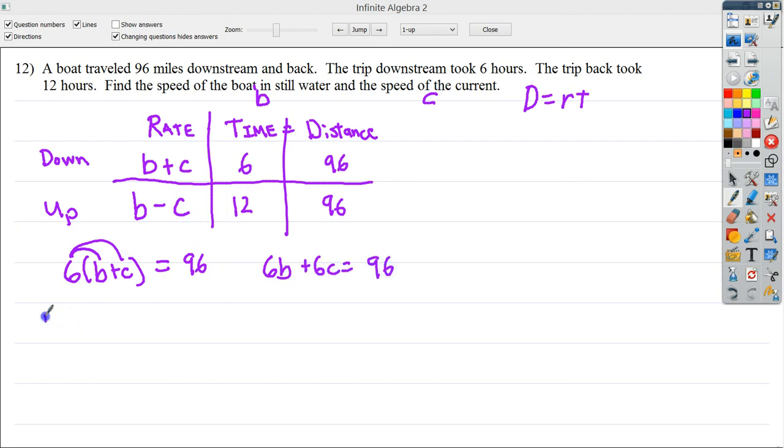On the upstream, I've got 12. I do this, and this, and I end up with 12B minus 12C equals 96.